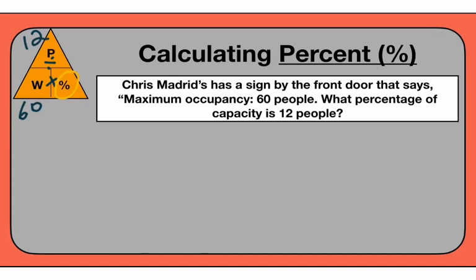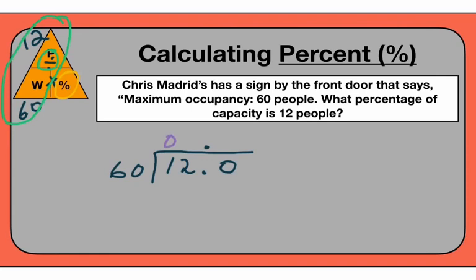The way I've written this in my triangle, it's going from here to there — which is 12 divided by 60. The part, the top number, always goes inside the division box, and I know that always looks weird to students because it's the smaller number most of the time. But that's the way you do it because you get a decimal answer that you turn into a percent. I'm going to make 12.0 — always put the decimal point and put a zero afterwards because you're going to get a lot of decimals when you work with percents.